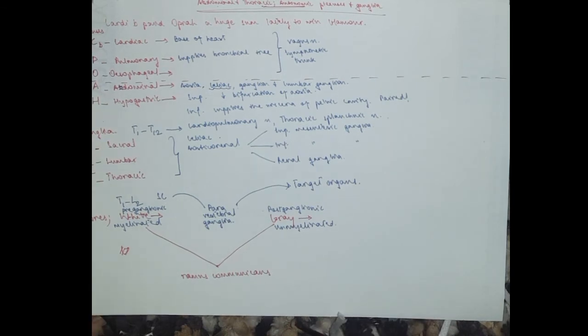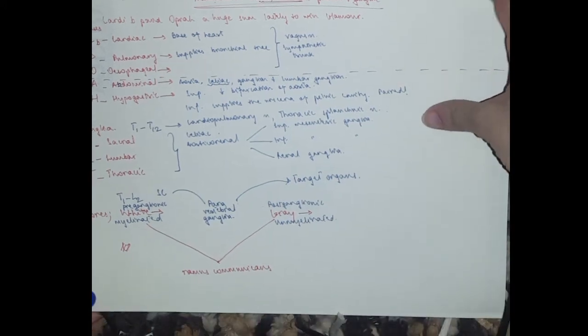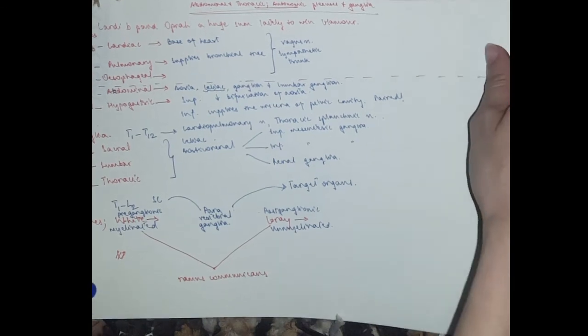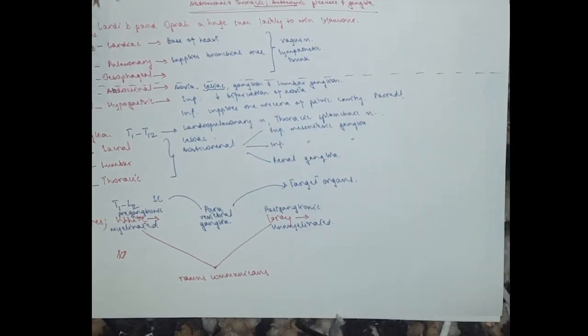Right, that is it about the white and the grey ramus communicans and Cardi B paid Opera a huge sum lately to win glamour. I hope you liked this video. If you did, please give it a thumbs up and subscribe for more videos. It was a long topic, the autonomic nervous system, five videos in total, but I hope it helped. Take care guys, see you.